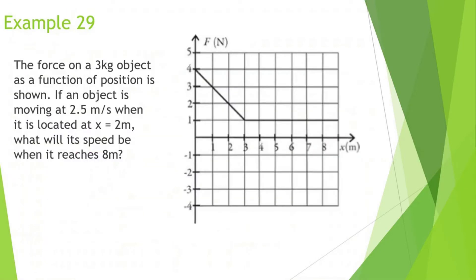The force on a 3-kilogram object as a function of position is shown. If the object is moving at 2.5 meters per second when it is located at 2 meters, what will be its speed when it reaches 8 meters? We want to look at the area under the curve from 2 to 8 meters and see how much work was done.